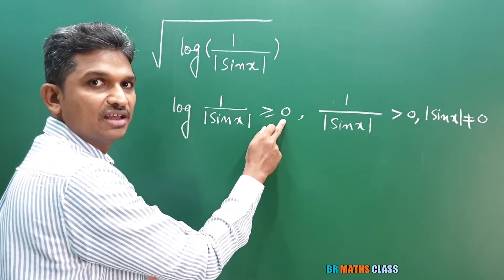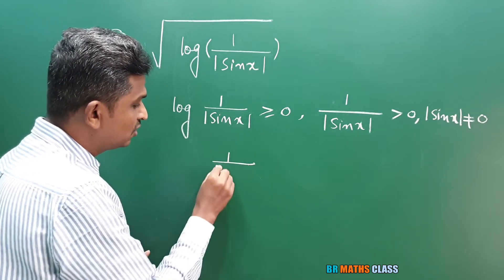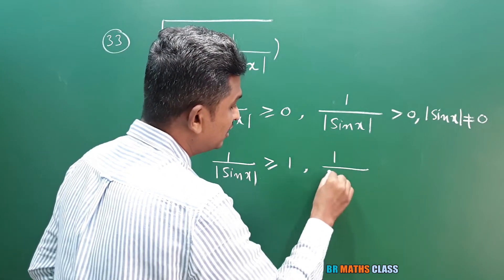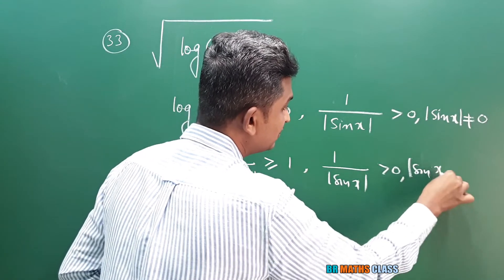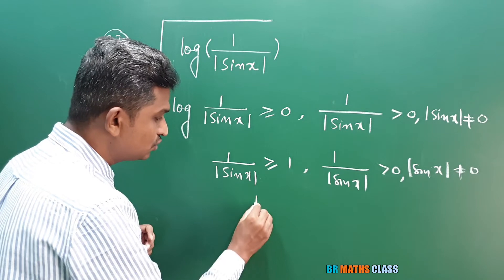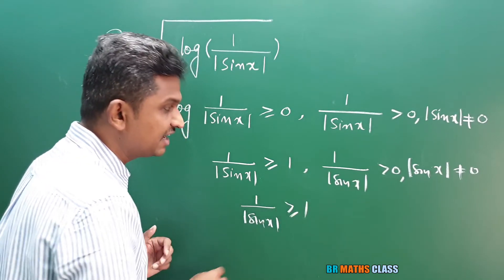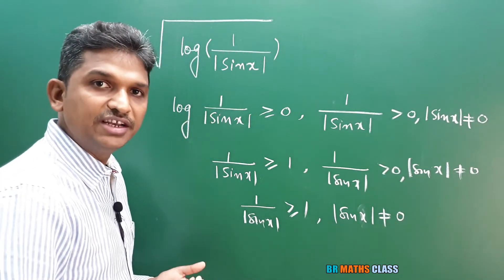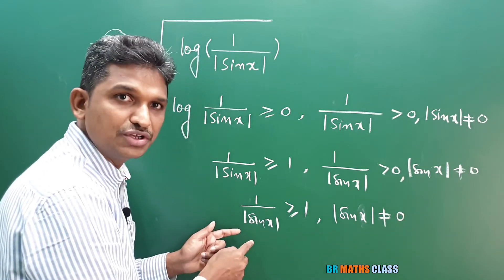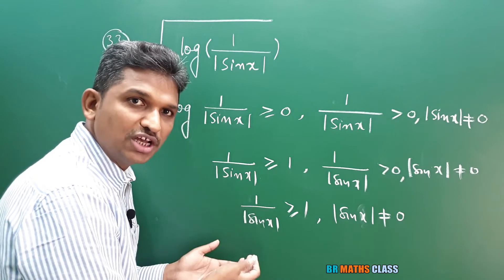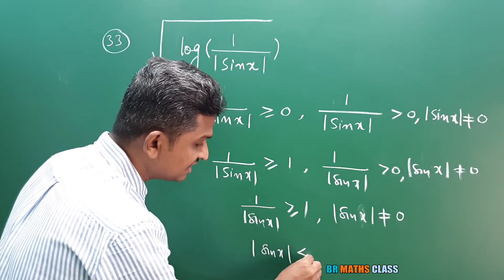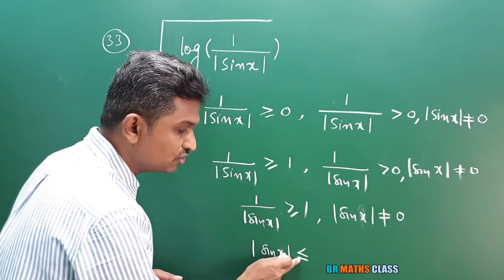Since no base is given, this is a common logarithm with base 10. As per the definition of logarithm with base 10 (which is greater than 1), the inequality remains the same: 1/|sin x| ≥ 10⁰ = 1. Combining with the condition |sin x| ≠ 0, we have 1/|sin x| ≥ 1 and |sin x| ≠ 0. Since both expressions are positive, we can take reciprocals — but when taking reciprocals of a positive inequality, the sign changes — giving |sin x| ≤ 1.